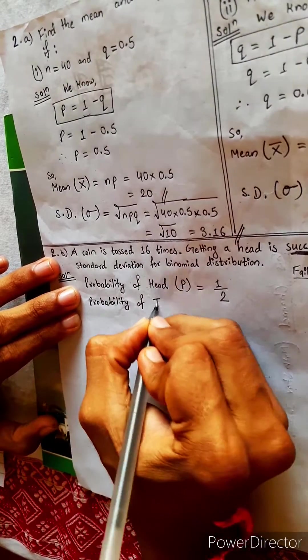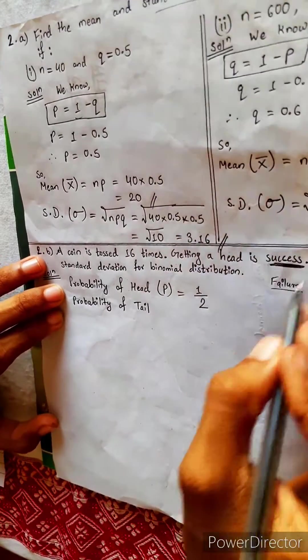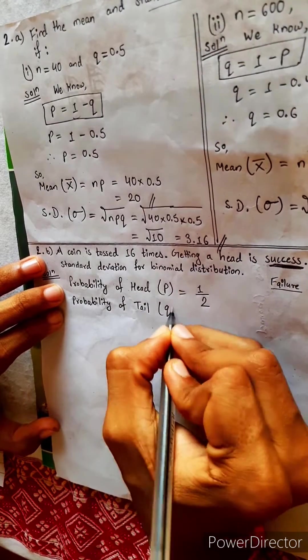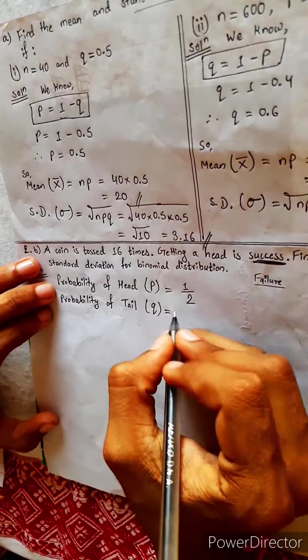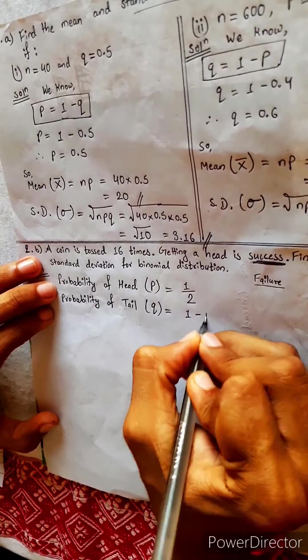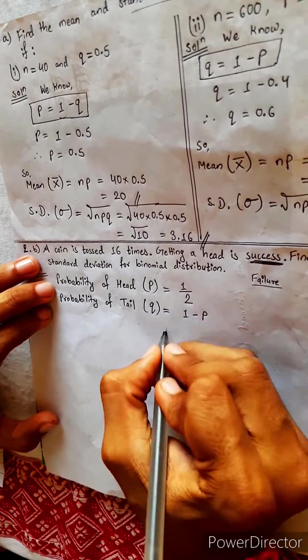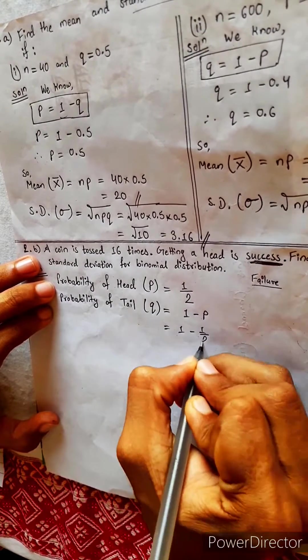We know q equals 1 minus p. This is the universal formula. So 1 minus 1/2, it is also 1/2. Now we have both p and q.